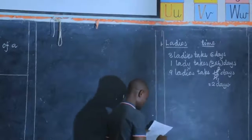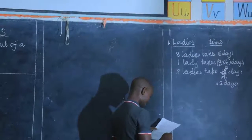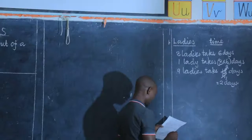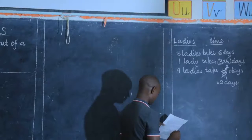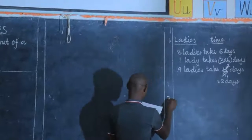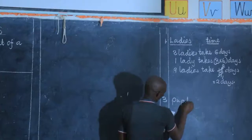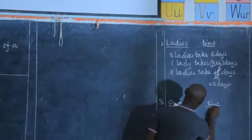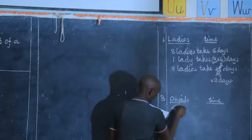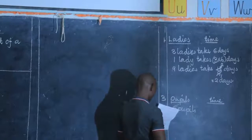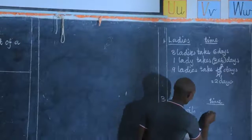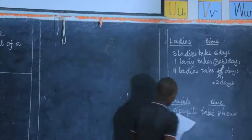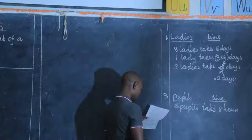Six people can dig a garden in eight hours. Find the period it will take 12 learners to dig the same garden. So we are looking for the time. We shall have people on this side and time on this side. So six people take eight hours to dig this garden.